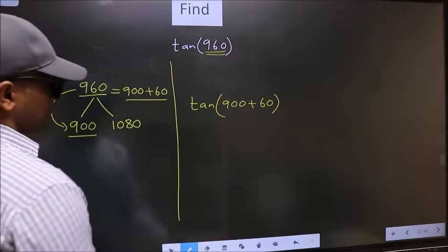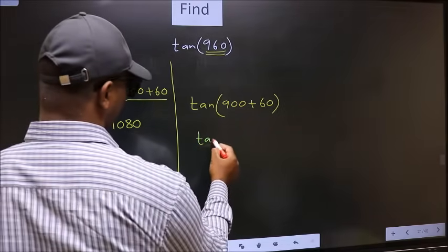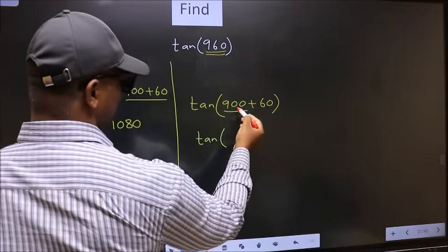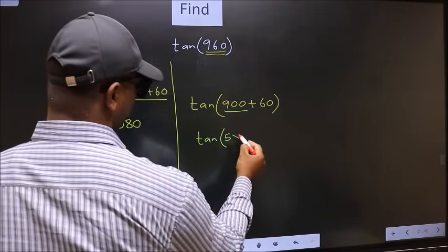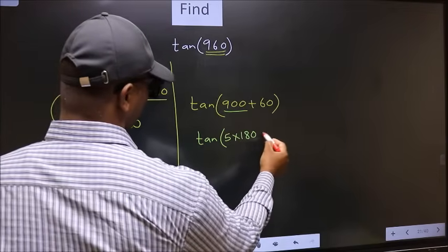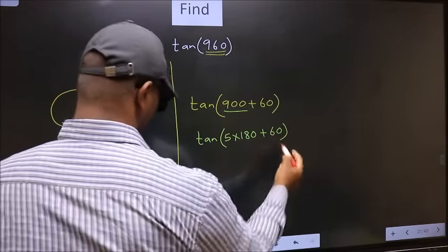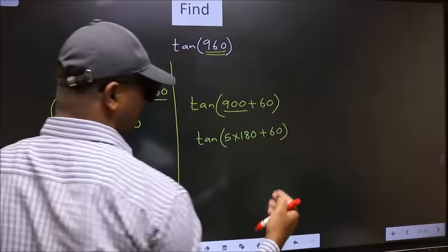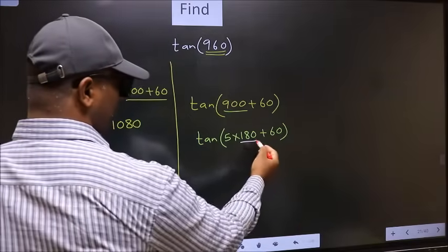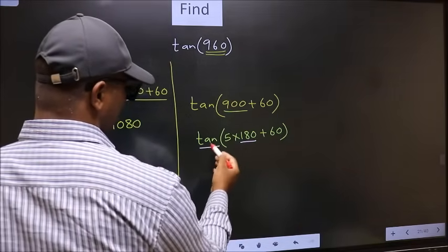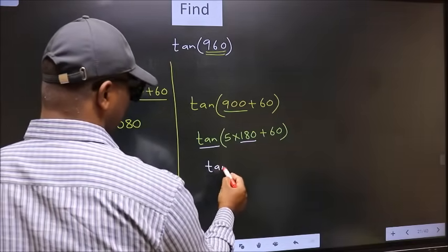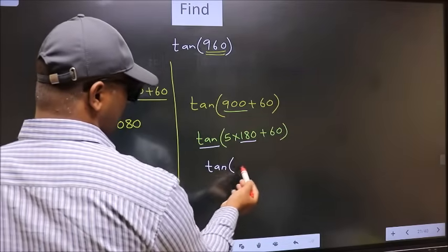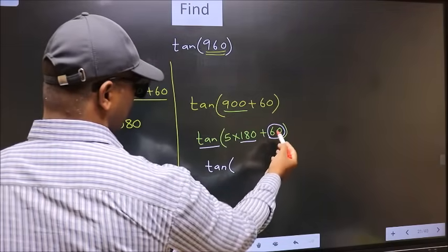Next, tan—in place of this, now we should write 5 × 180 plus 60. Next, here we have 180, so tan is not going to change. It will remain tan. And inside, we get this angle 60.